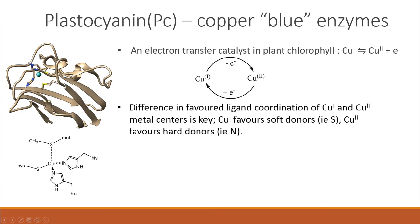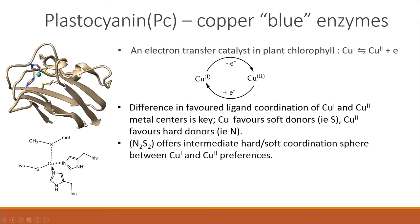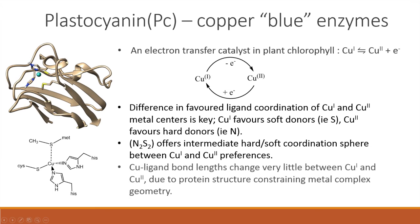The entatic effect for plastocyanin arises from the hard-soft acid preferences of copper-1 and copper-2. Copper-1, being of a lower oxidation state and smaller in size, makes it a soft acid, preferring soft donors of similar characteristics, and vice versa for the hard acid copper-2. The coordination sphere in plastocyanin is an intermediate hard-soft donor set, binding a hypothetical copper-1.5 transition state, therefore allowing rapid electron transfer between the destabilised copper-1 and copper-2 species. In addition, the bond lengths are also strained to resemble a transition state, further increasing reaction rate.